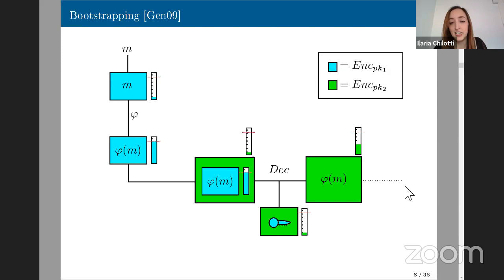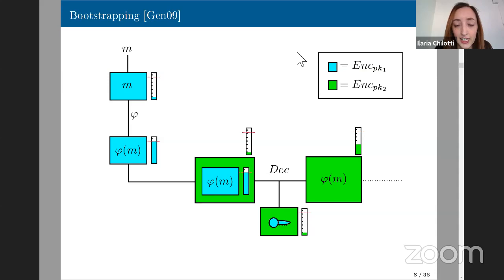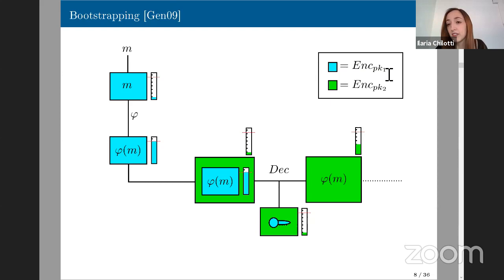Bootstrapping is not a cheap operation — it's quite costly in practice. There's a question: do the two keys need to be different? No, not necessarily. I put them in different colors to make a distinction, but it's not mandatory. They can be the same key — in that case, we talk about circular security, because the key is encrypted under the key itself.